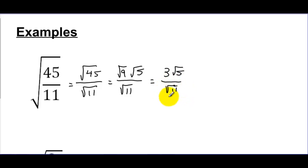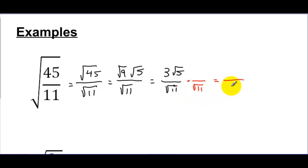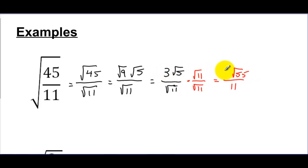The second problem is that the square root of 11 is in the denominator, so I rationalize by multiplying top and bottom by square root of 11. Square root of 11 times square root of 11 is the square root of 121, which is just 11 — the radical goes away. I multiply 5 and 11 together under the radical to get square root of 55. The 3 stays on the outside. Checking the checklist: 55 has no perfect square factors, there's no fraction under the radical, and there's no radical in the denominator — this is fully simplified.